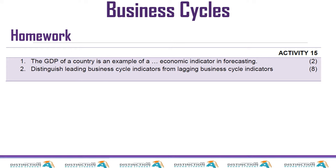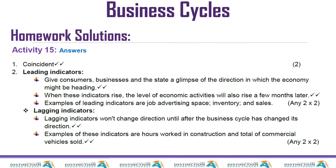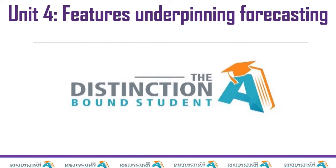As usual we start with our homework from the previous lesson. The question was: the GDP of a country is an example of a dash economic indicator, and then distinguish leading business cycles from lagging. This was an easy one — I'm going to show you the answers and you can mark yourself. You can pause the video. Let's move on to the last part of features underpinning forecasting.